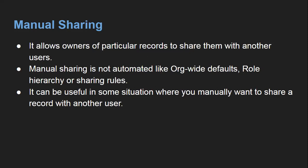The last method is manual sharing. It allows owners of particular records to share them with other users. Manual sharing is not automated like role hierarchies or sharing rules — you need to do it manually. It can be useful in situations where you manually want to share a specific record with another user.